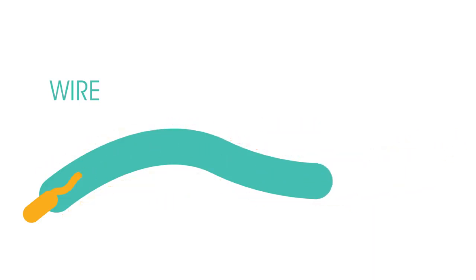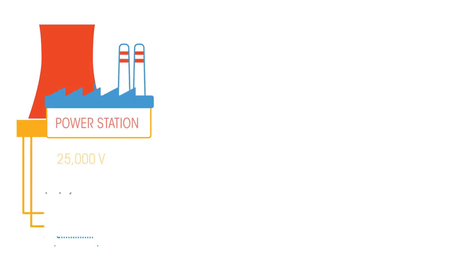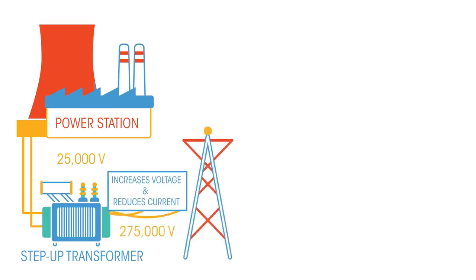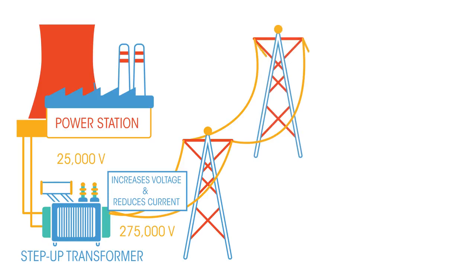In order to lose as little energy as possible, transformers are used. When the electricity leaves the power station, it passes through a step-up transformer. A step-up transformer increases the voltage and reduces the current. Reducing the current makes the transfer of electricity more efficient, as less energy is lost as heat.